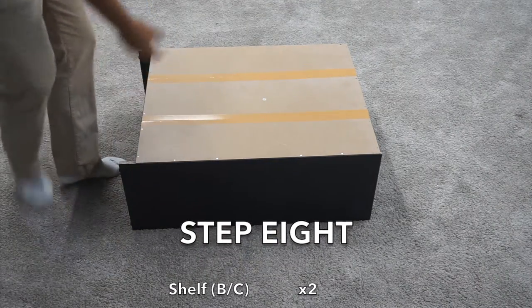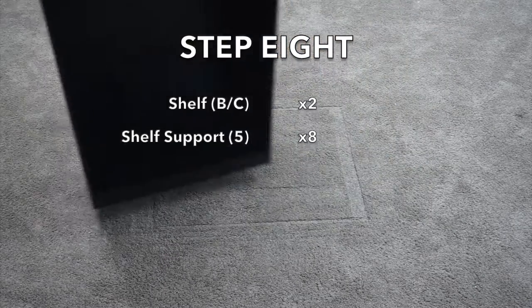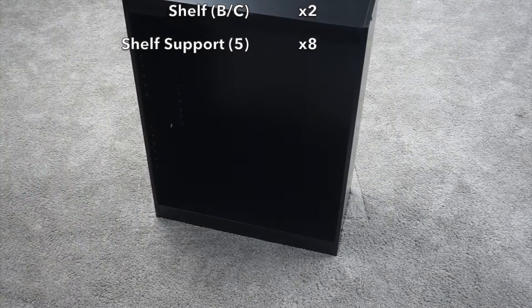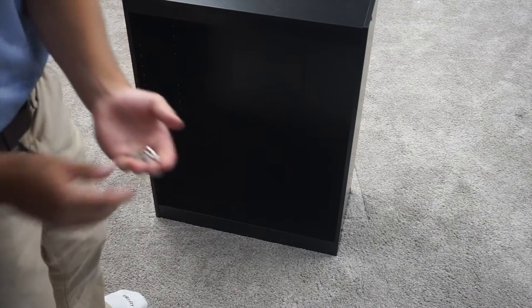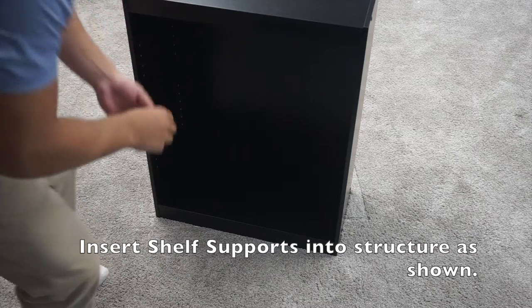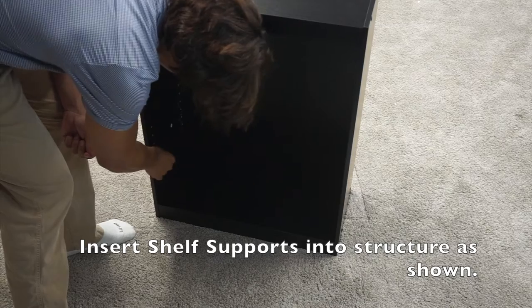Now that you have attached this back panel, you can go ahead and set your unit up. Then you can grab eight of these supports and go ahead and put them at whatever level you would like your shelf at. I am going to do mine three up.